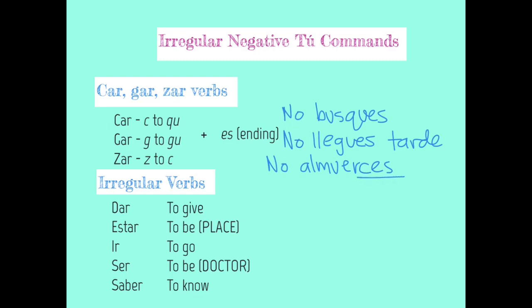For ZAR verbs, the Z changes to C and then you add ES. Besides the CAR, GAR, and ZAR verbs being irregular, we also need to watch out for these fully irregular verbs. These are just plain old irregular — they have unexpected forms and we need to make sure that we have them memorized.